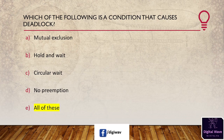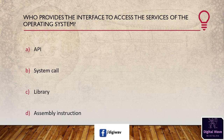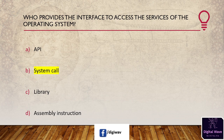Next question: who provides the interface to access the services of the operating system? Options: API, system call, library, assembly instruction. The right answer is system call. The system call provides an interface for user programs to access the services of the operating system through the APIs. API stands for Application Program Interface.